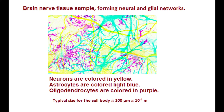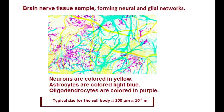Neurons are colored in yellow. Astrocytes, a type of glial cell, are in light blue. Oligodendrocytes, another type of glial cell, are in purple. The typical size for the cell body is about 100 micrometers.